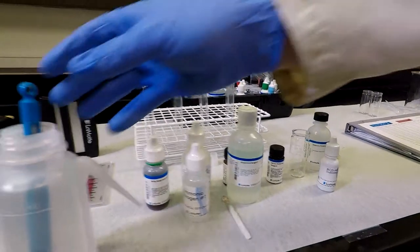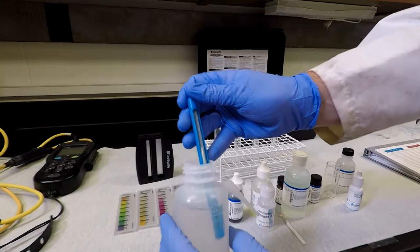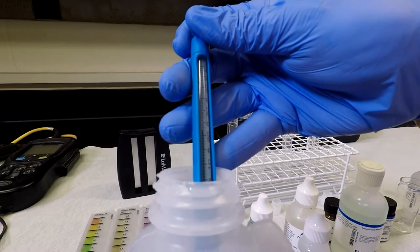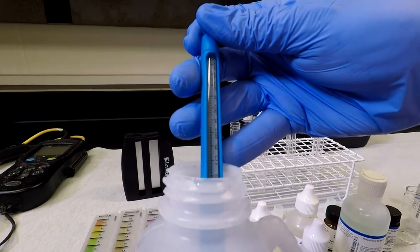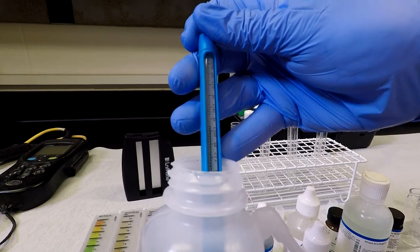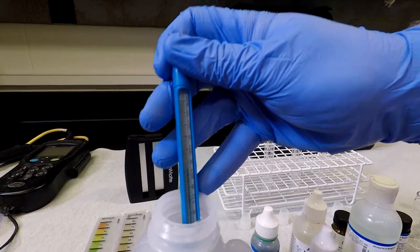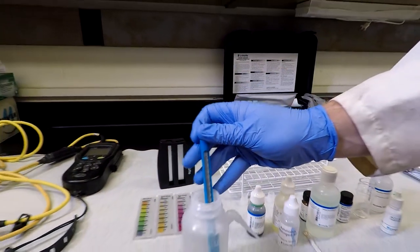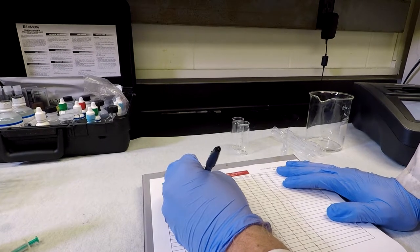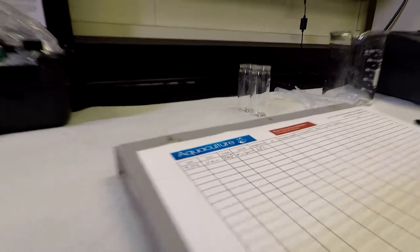After we've waited a couple of minutes, we can look here and we're reading a temperature of about 23 degrees Celsius, which is going to be right around room temperature in the low 70s. So I'll go ahead and record that number here. The next test that I'll do is pH.